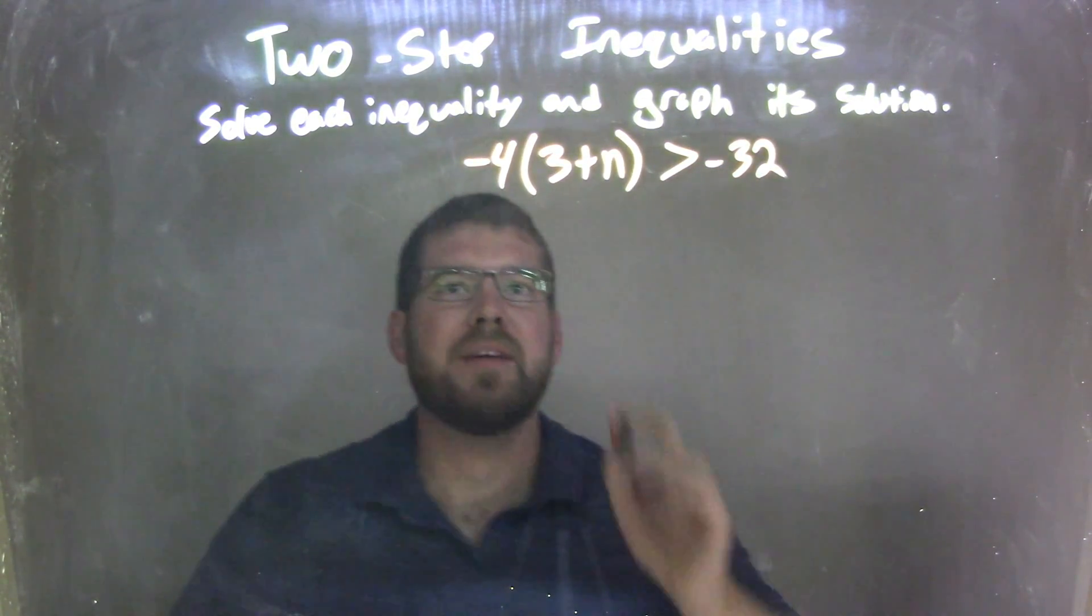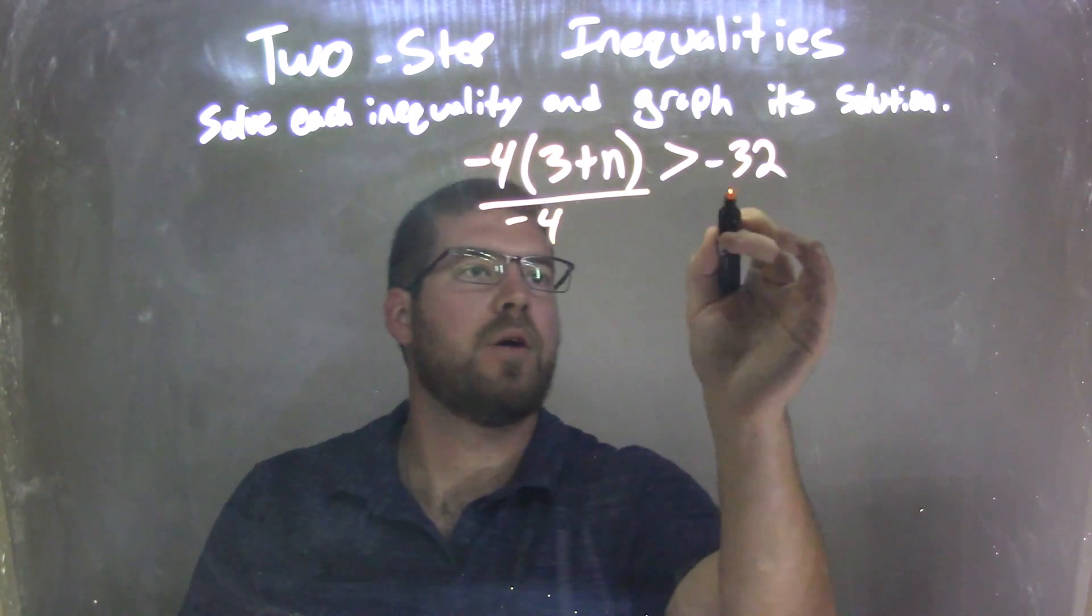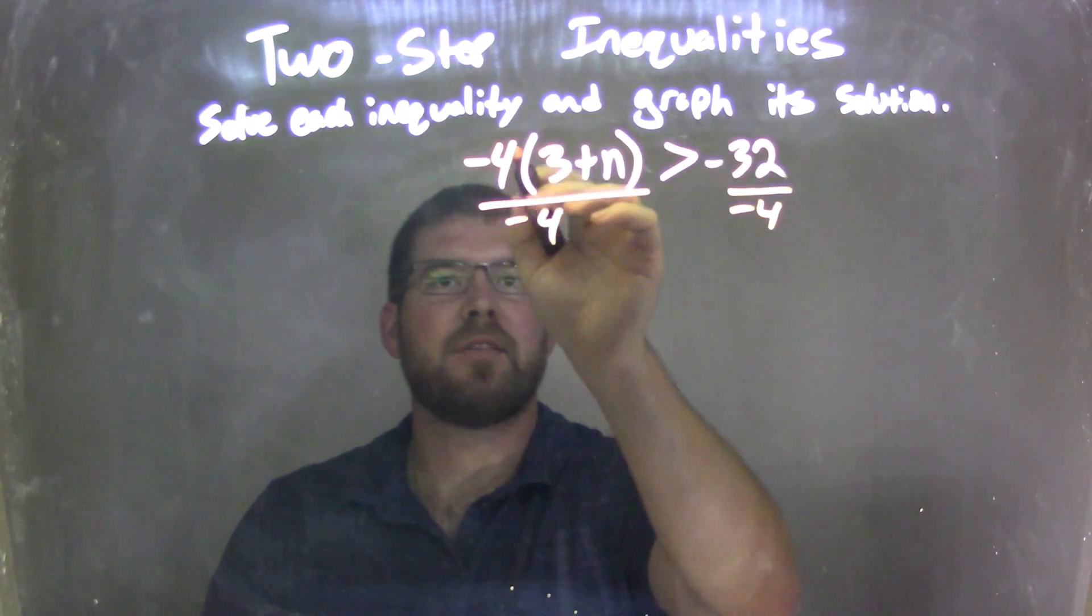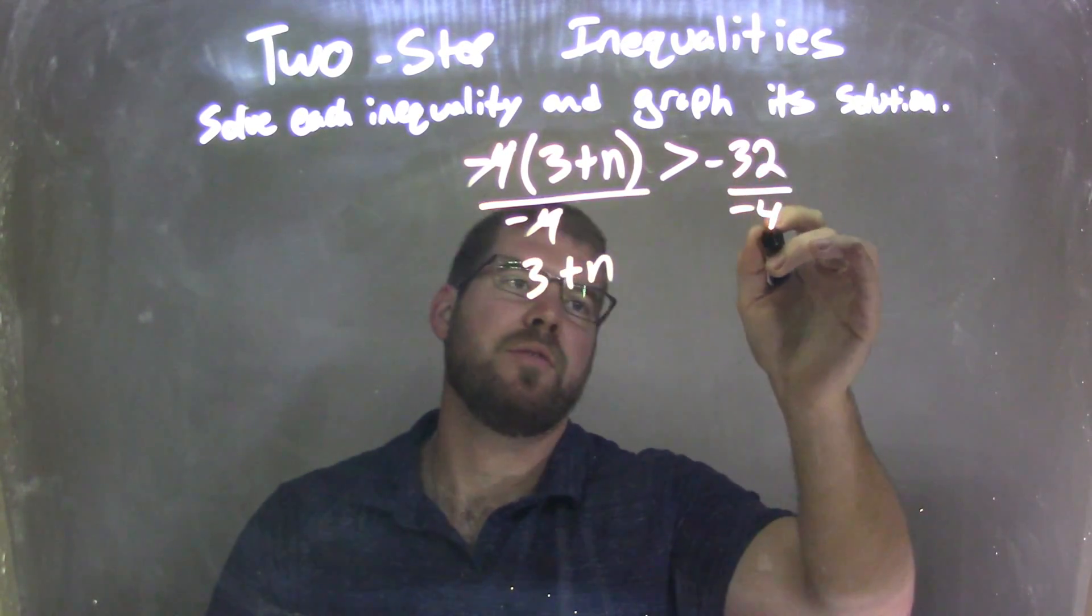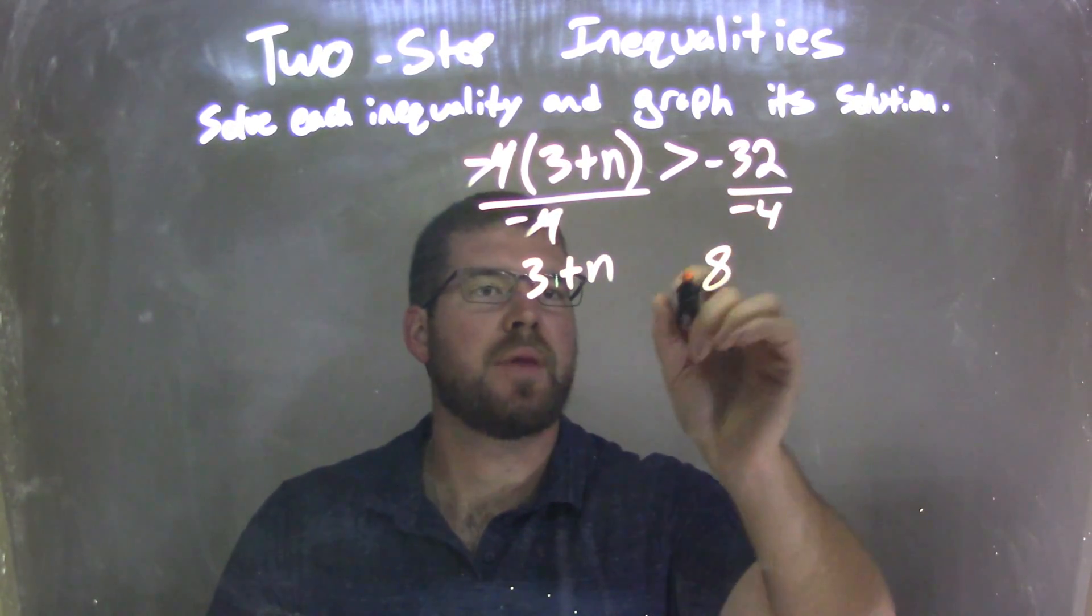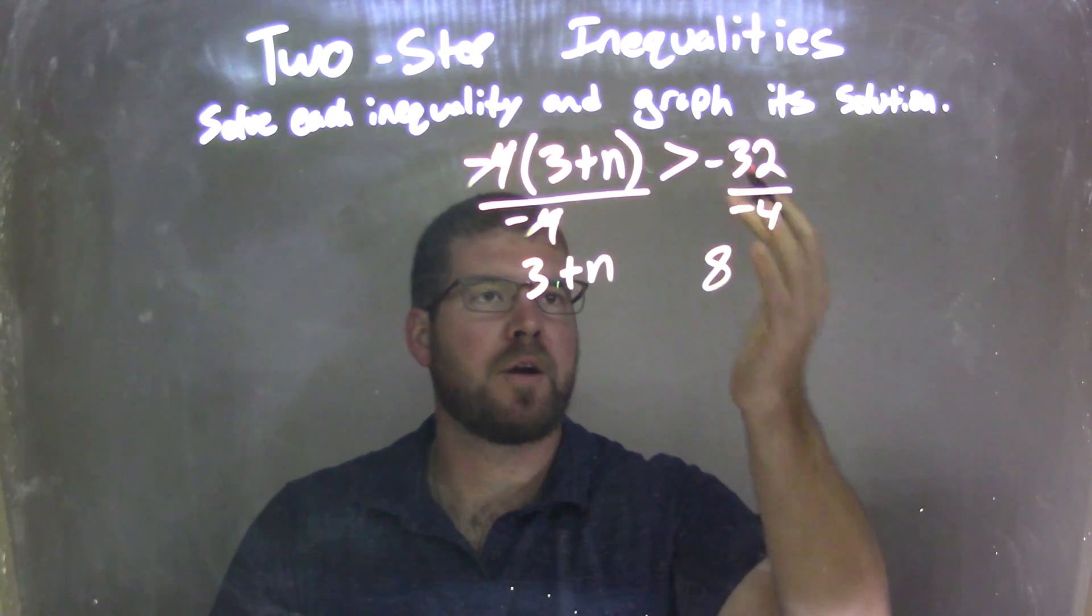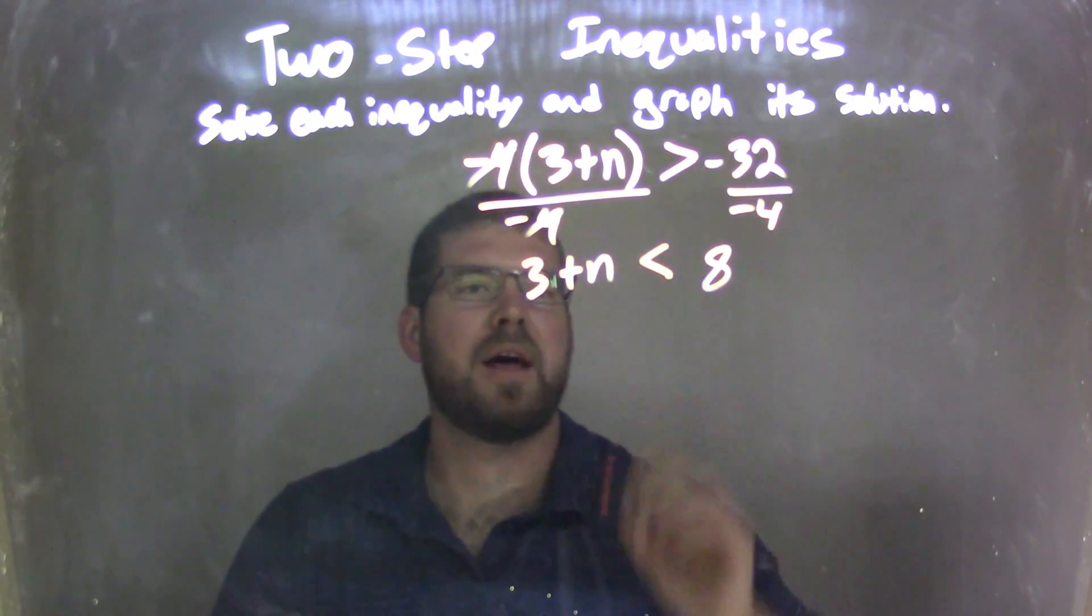Well, my first step is I need to divide by negative 4 to both sides. What that does is it eliminates the negative 4 out here and gives me 3 plus n over there, and negative 32 divided by negative 4 is a positive 8. But since I divided by a negative over an inequality, that greater than sign turns into a less than sign.